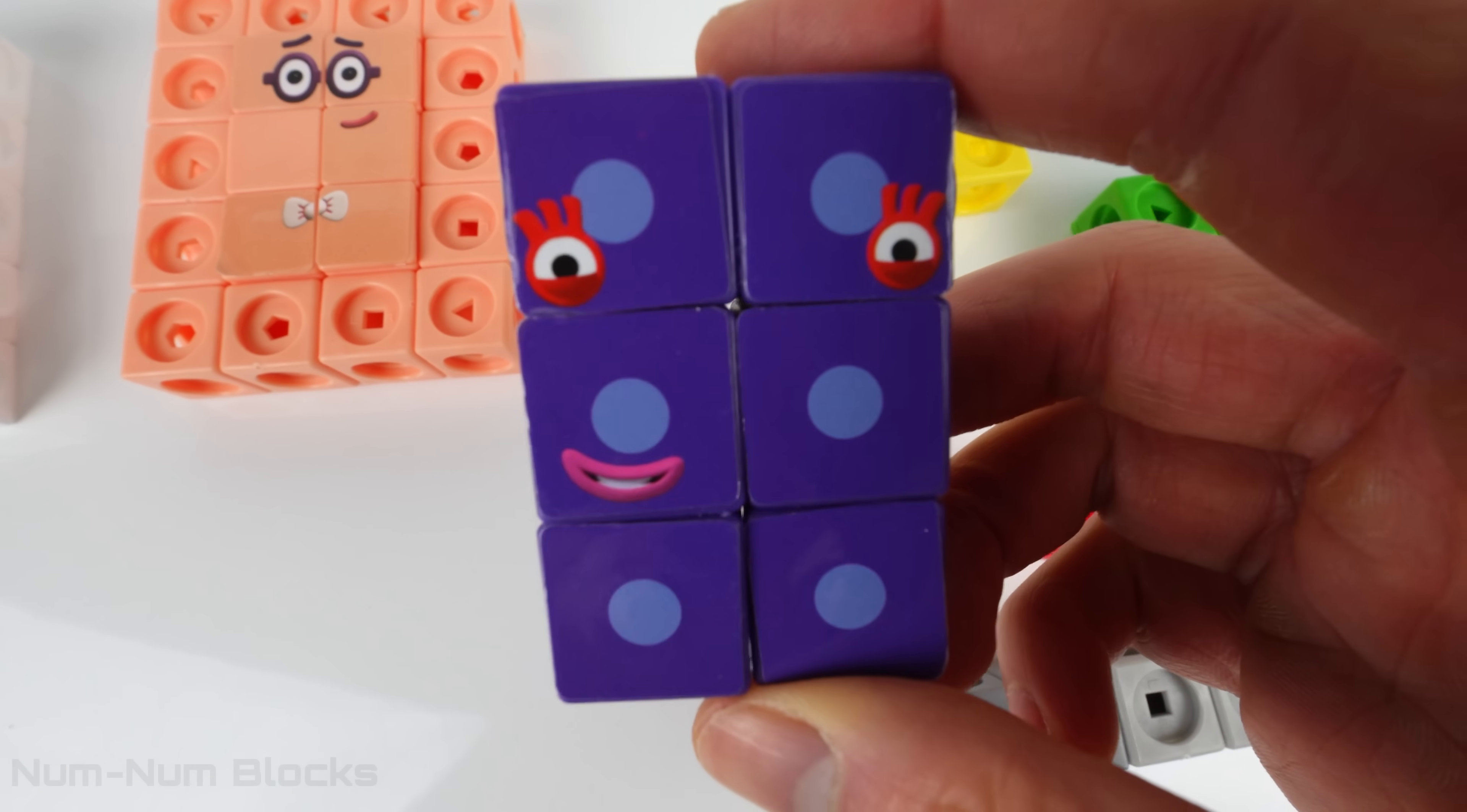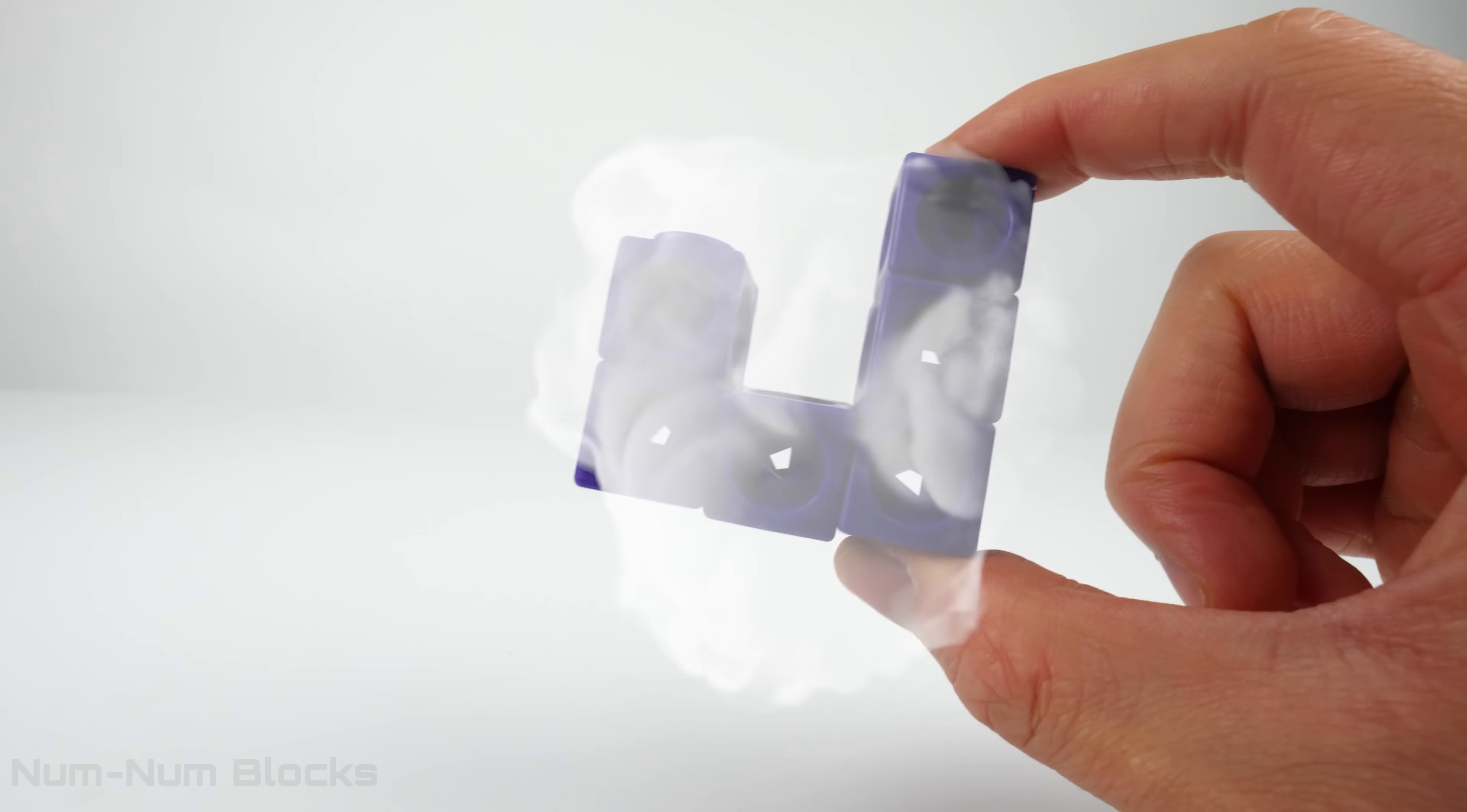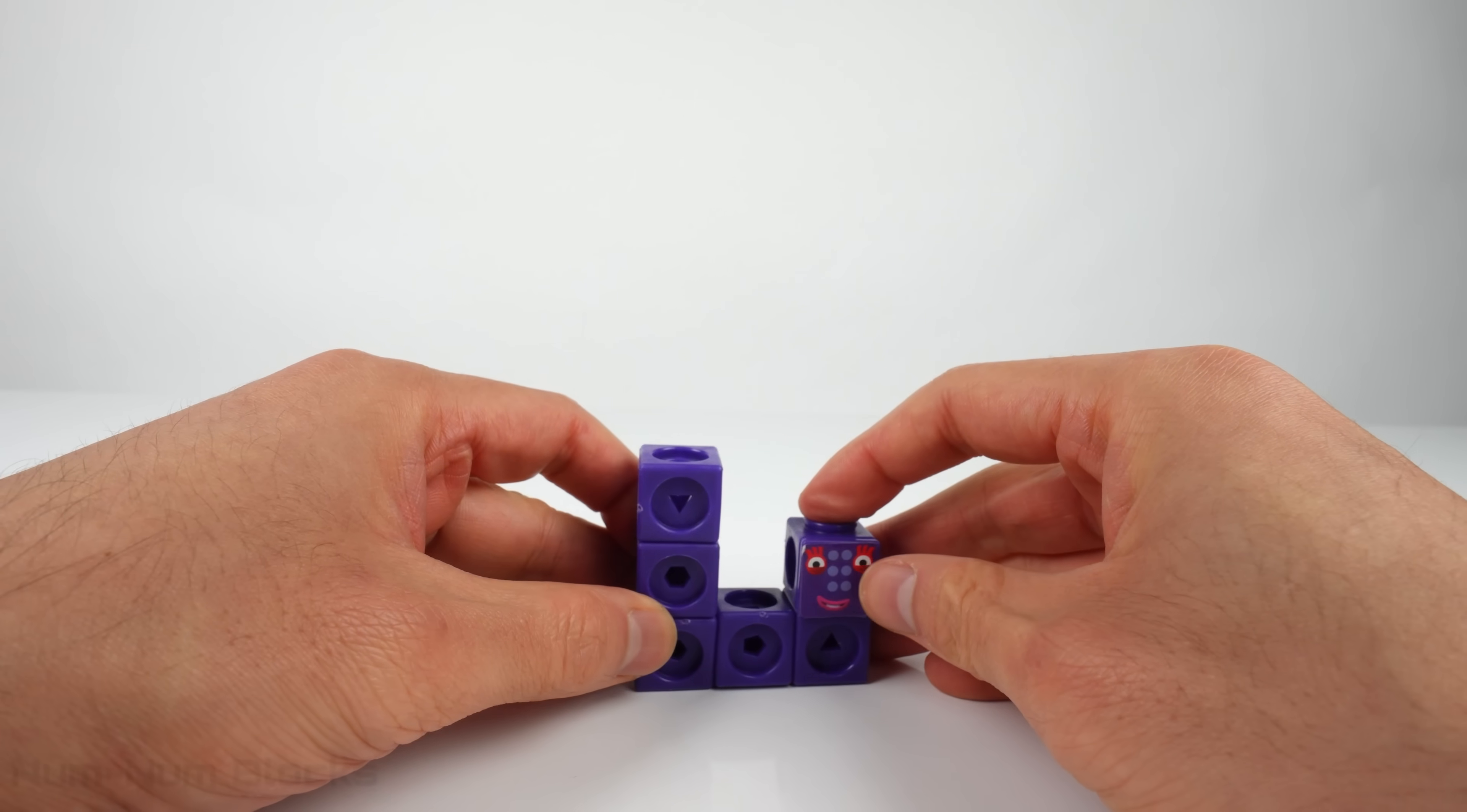6! The first number is 6. Let's rearrange 6's blocks. Look, we can make 6 look like this. Let's place her right here.